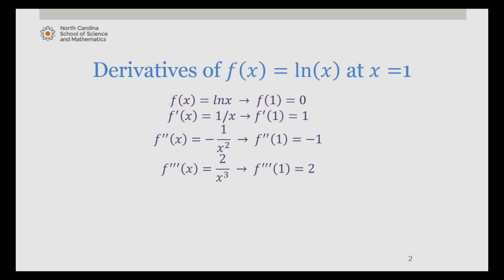The third derivative is 2 over x cubed, evaluated at 1 is 2. The fourth derivative is negative 2 times 3 over x to the fourth, evaluated at 1 is negative 6.